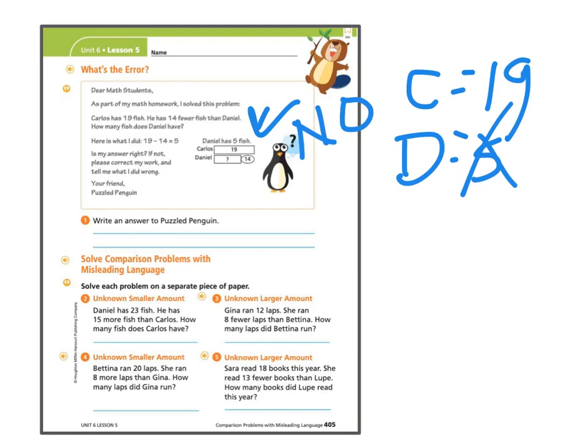On the bottom, really just a lot of problems with the unknown smaller amount or an unknown larger amount. So you just have to read them carefully. Daniel has 23 fish. He has 15 more than Carlos. So what I know is that if Daniel has more than Carlos, Carlos has got to be less, which means it's going to be a subtraction problem. How many does Carlos have?